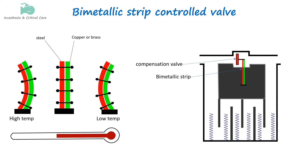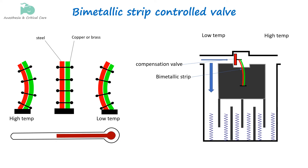When the ambient temperature increases, the strip bends in a way that increases the flow into the bypass channel, reducing the flow to the vaporizing chamber. This decreases the amount of gas that picks up anesthetic vapor. When the temperature decreases, the strip bends in the opposite direction, increasing the flow into the vaporizing chamber, compensating for the reduced vapor pressure by allowing more gas to pick up the anesthetic vapor. Bimetallic strips are specifically utilized in variable bypass vaporizers, which allow for automatic and precise control over the concentration of anesthetic delivered to patients.